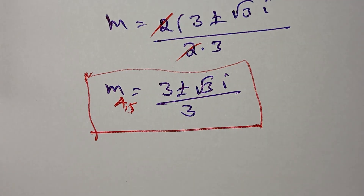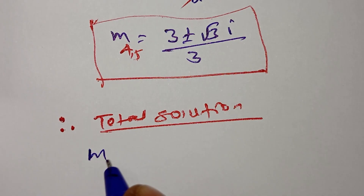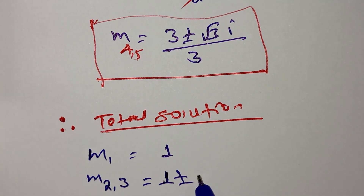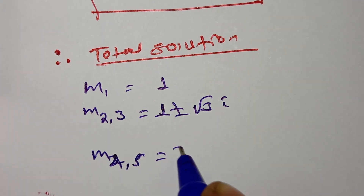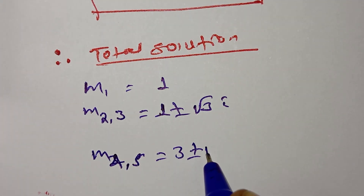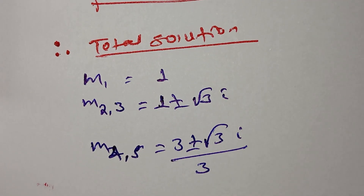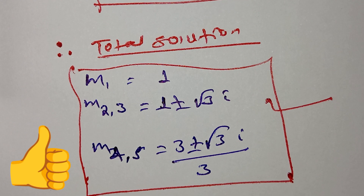Therefore all five solutions are: m₁ equals 1; m₂ and m₃ equal 1 plus or minus √3·i; and m₄ and m₅ equal (3 plus or minus √3·i) over 3. Five solutions! Thank you for watching, please like and subscribe for more. Bye bye.